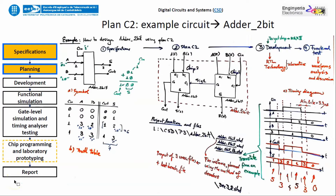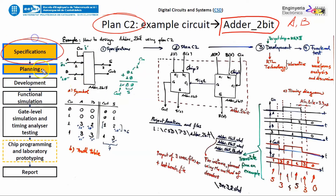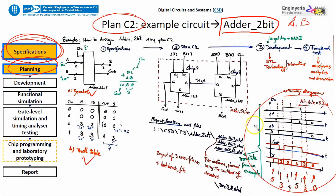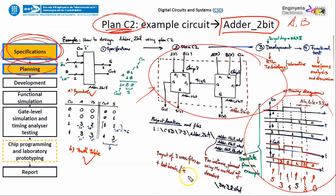Let's design this simple circuit - the 2-bit adder. Previously we had Plan A and Plan B. Now it's going to be Plan C2. The specifications are exactly the same: the truth table, the symbol, and the timing diagram are as usual. But this time, Plan C2 means developing or inventing a structure consisting of several chips connected together in some way.